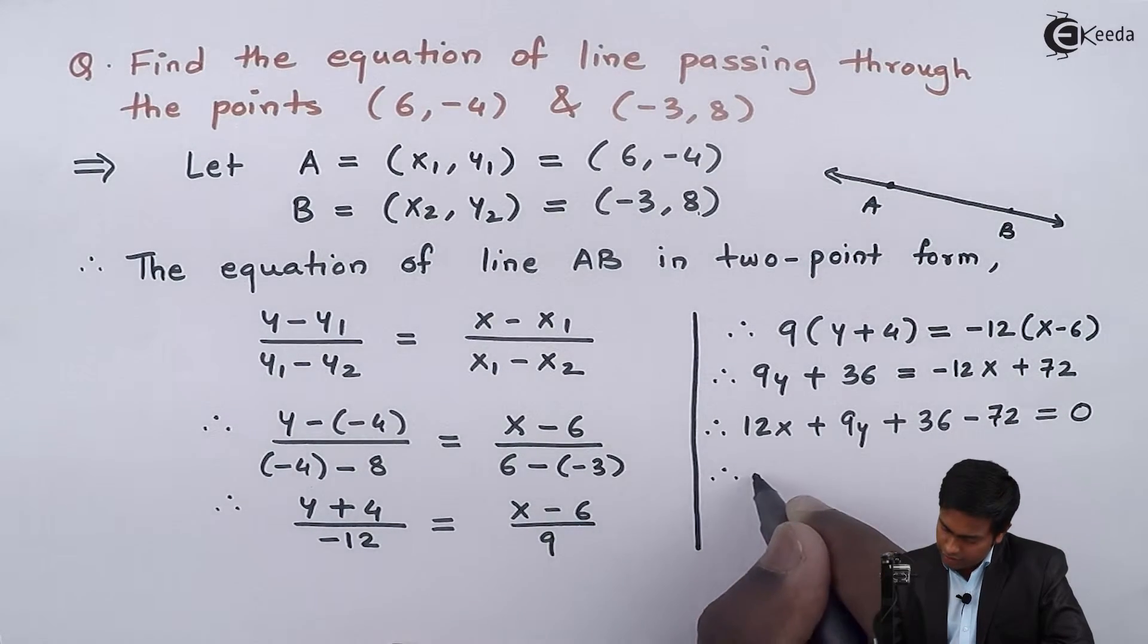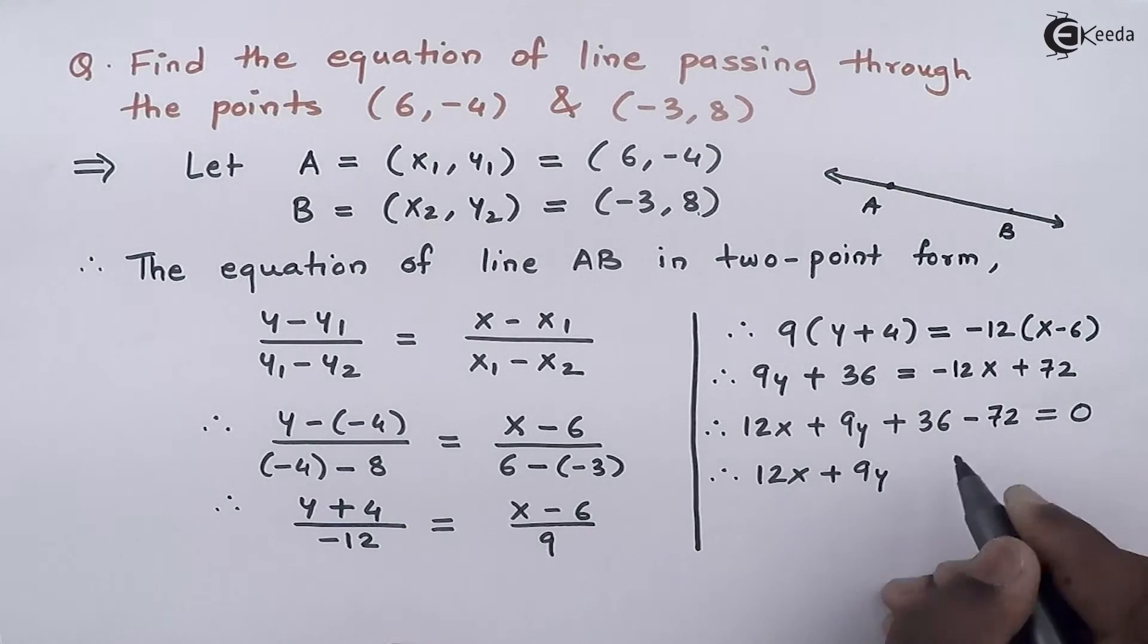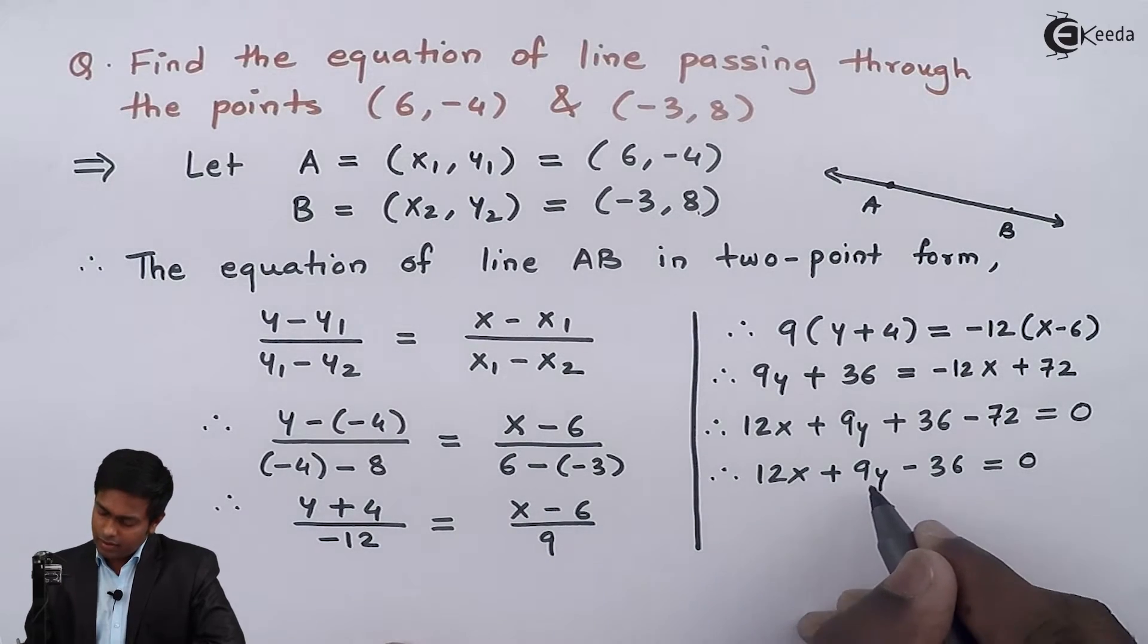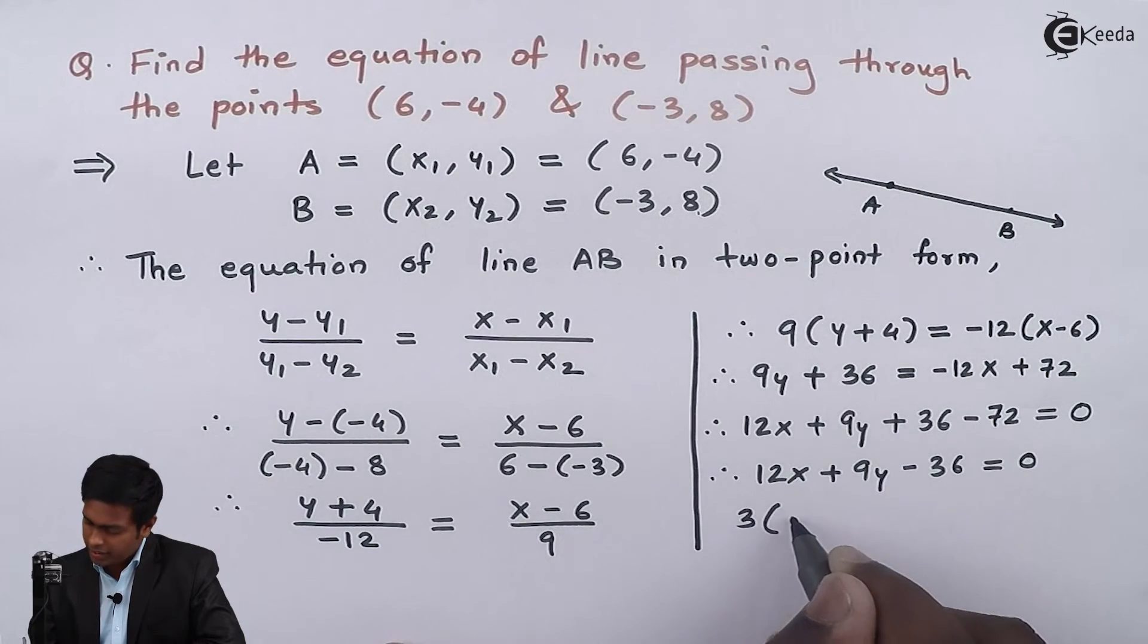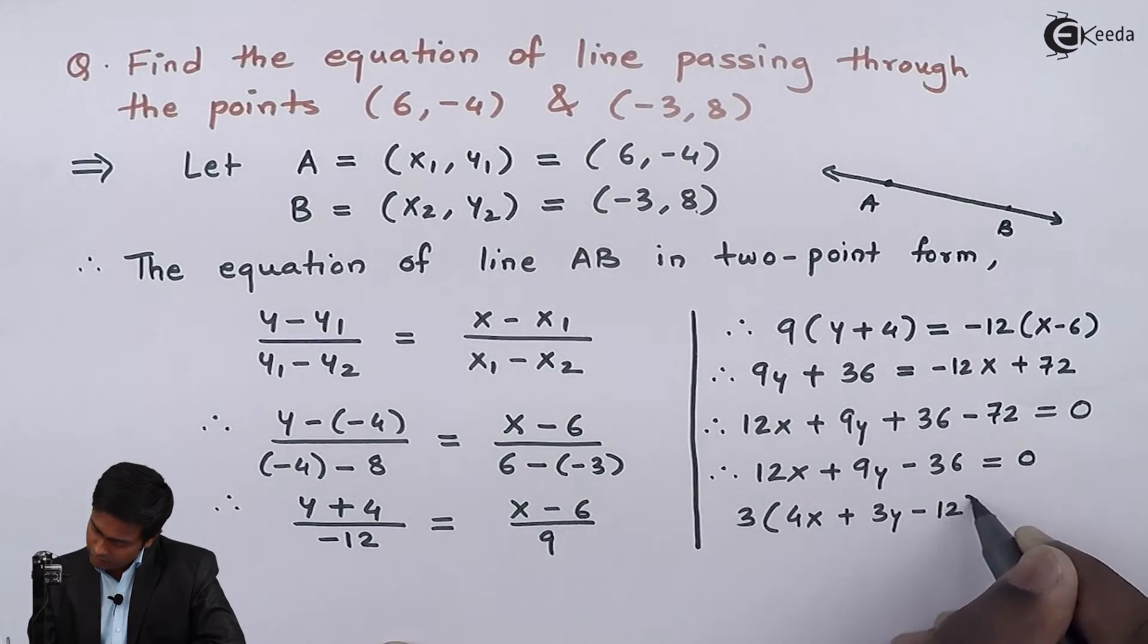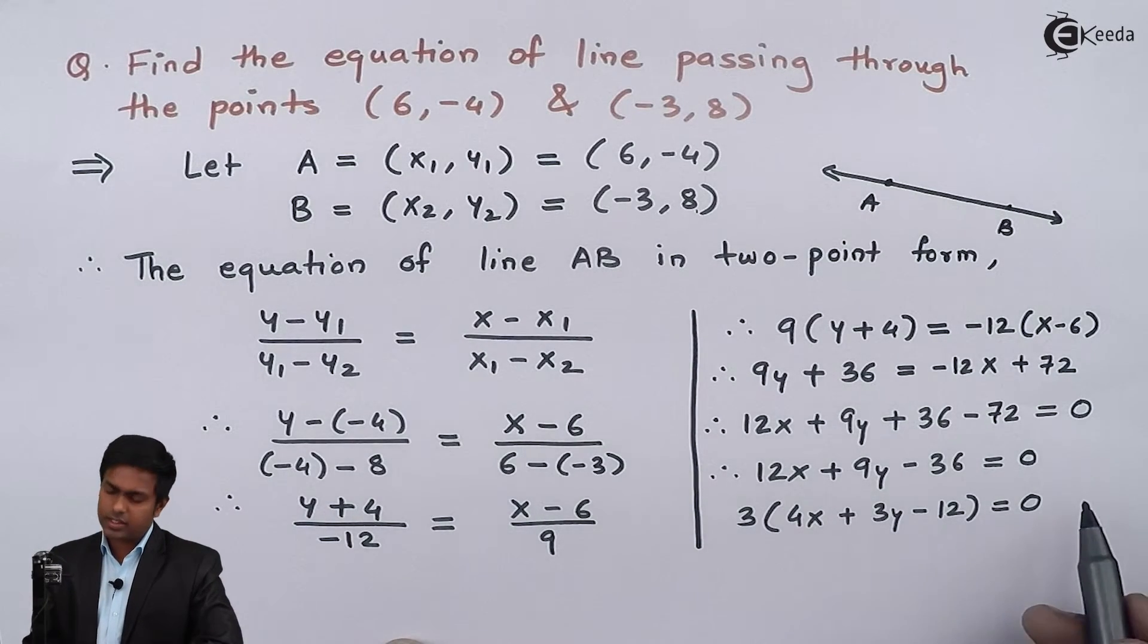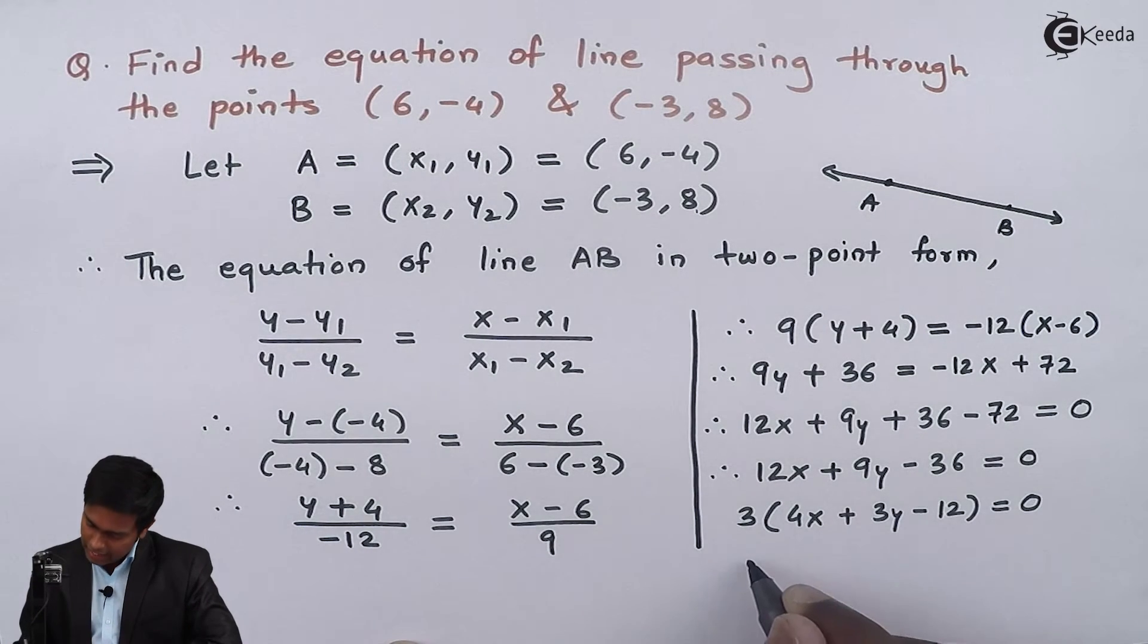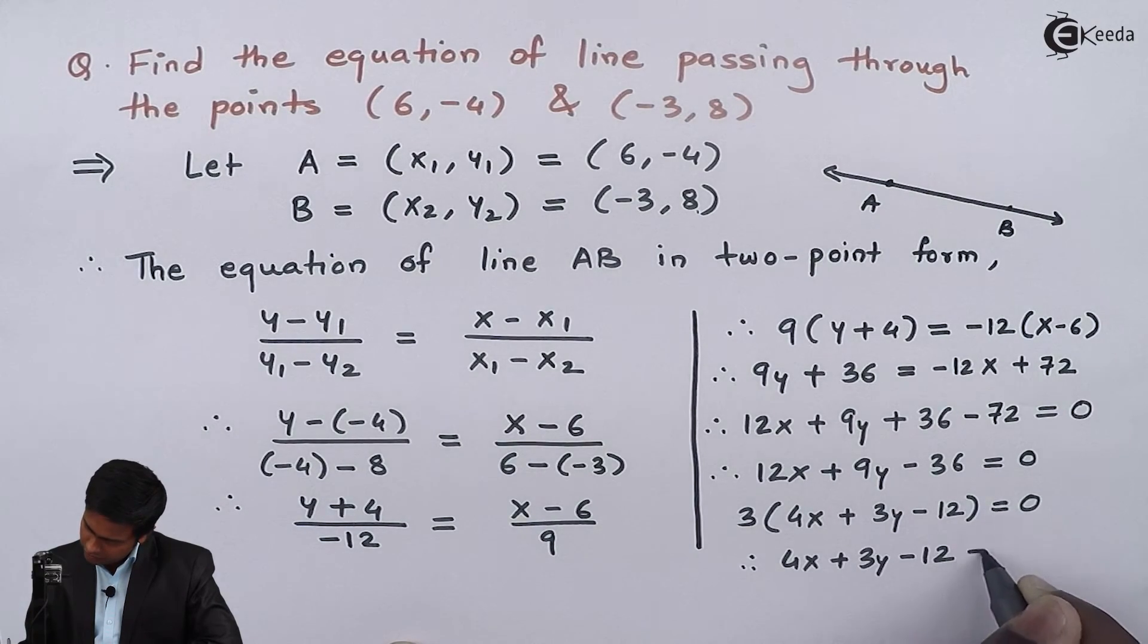Therefore, 12x + 9y - 36 = 0. Taking 3 common from all terms: 3(4x + 3y - 12) = 0. Therefore, 4x + 3y - 12 = 0.